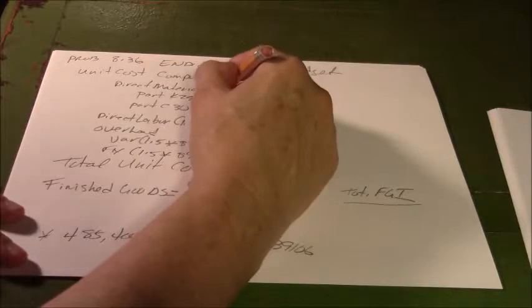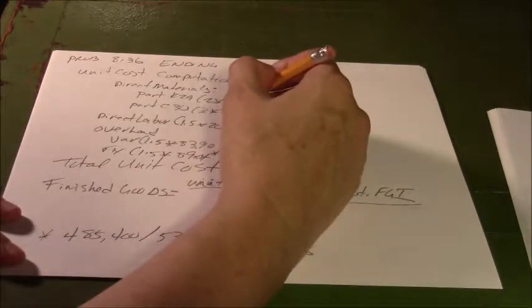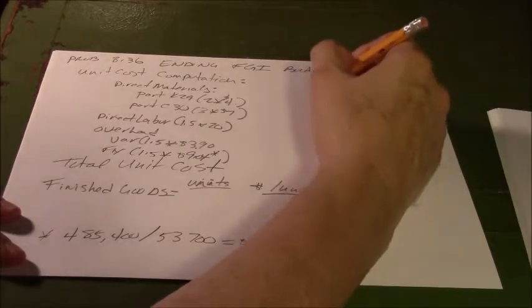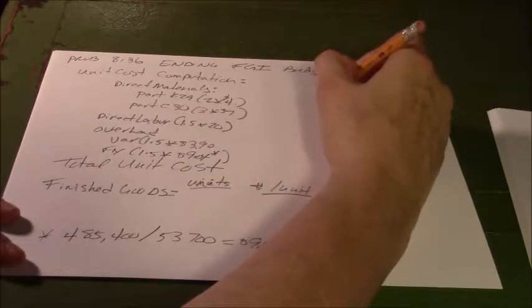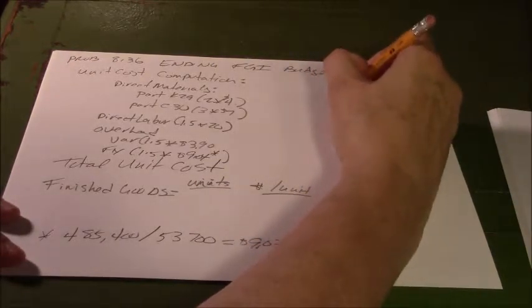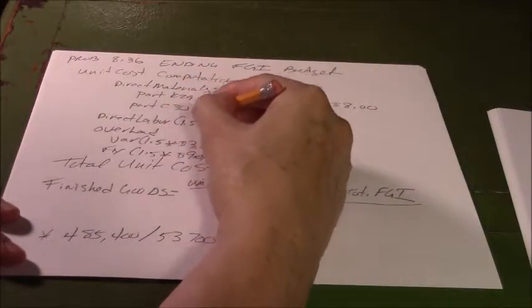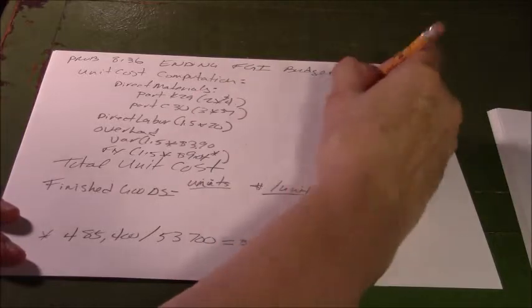Here's our cost per unit. We know direct materials - Part 29, we need four at $4 each, so that's going to be $8. We know Part C30 was $7, so three times seven, so we know that's going to be $21.